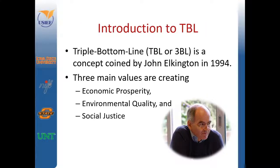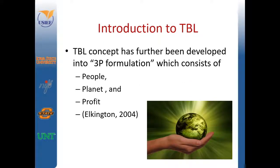The triple bottom line is a concept that was coined by John Elkington in 1994. There are three main values in creating the triple bottom line, which include economic prosperity, environmental quality, and social justice. The triple bottom line has been further developed into the three P formulation, which consists of people, planet, and profits.